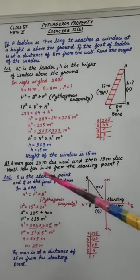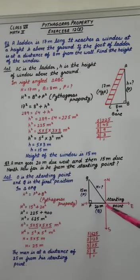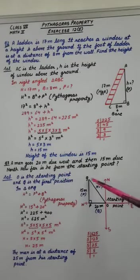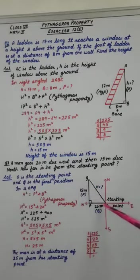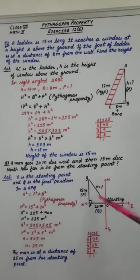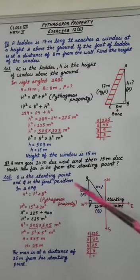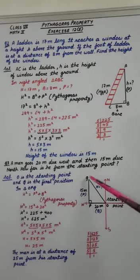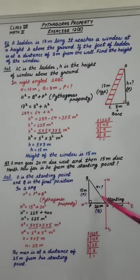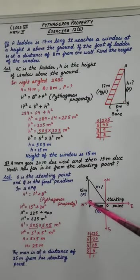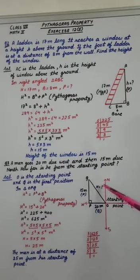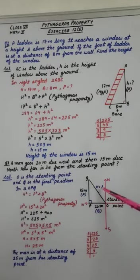Now, we have to find his distance from the starting point. This is the final position. This is the starting position. So, we have to find this distance QO. O is the starting point, Q is the final position. This is again a right angled triangle where QO is hypotenuse because it is opposite to 90 degree. We have to calculate H here.